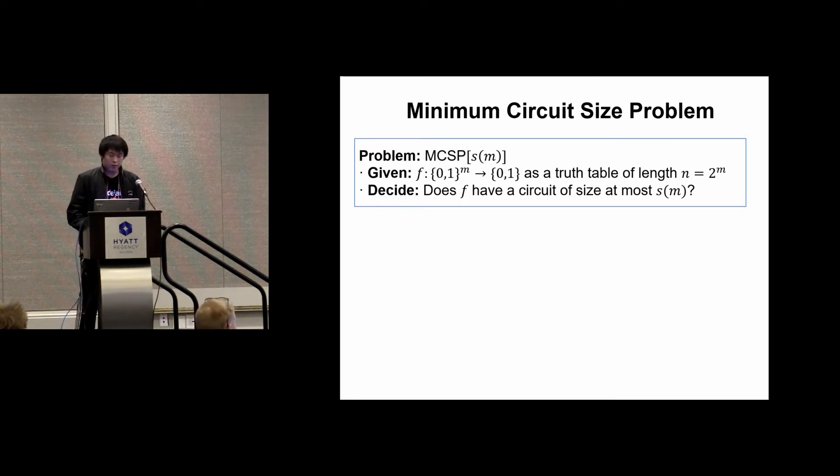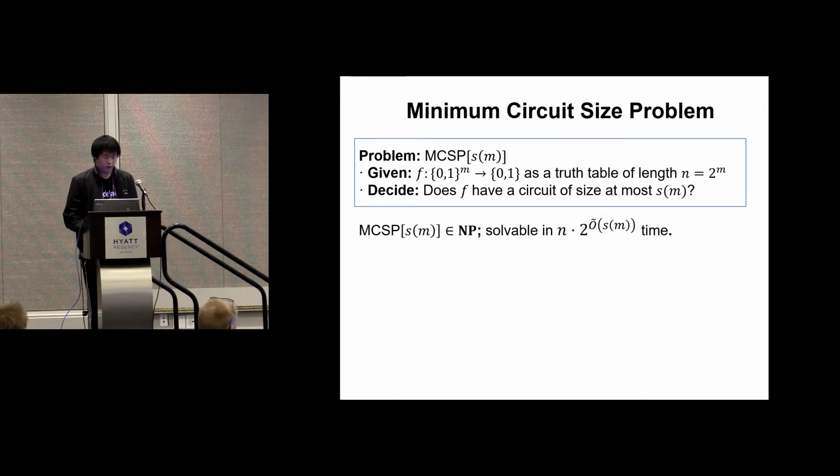In other words, we decide if the input string can be compressed into a succinct circuit representation. The MCSP problem is clearly in NP. The witness is simply a correct circuit which has size at most linear in the length of the truth table, and it's solvable in roughly n times 2^(S(m)) time by enumerating all circuits of size smaller than S(m).